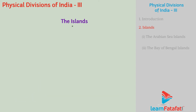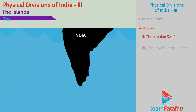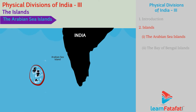In general there are two groups of Islands: the Arabian Sea Islands and the Bay of Bengal Islands. The Islands in the Arabian Sea are Lakshadweep, Minicoy, and Amindivi Islands.